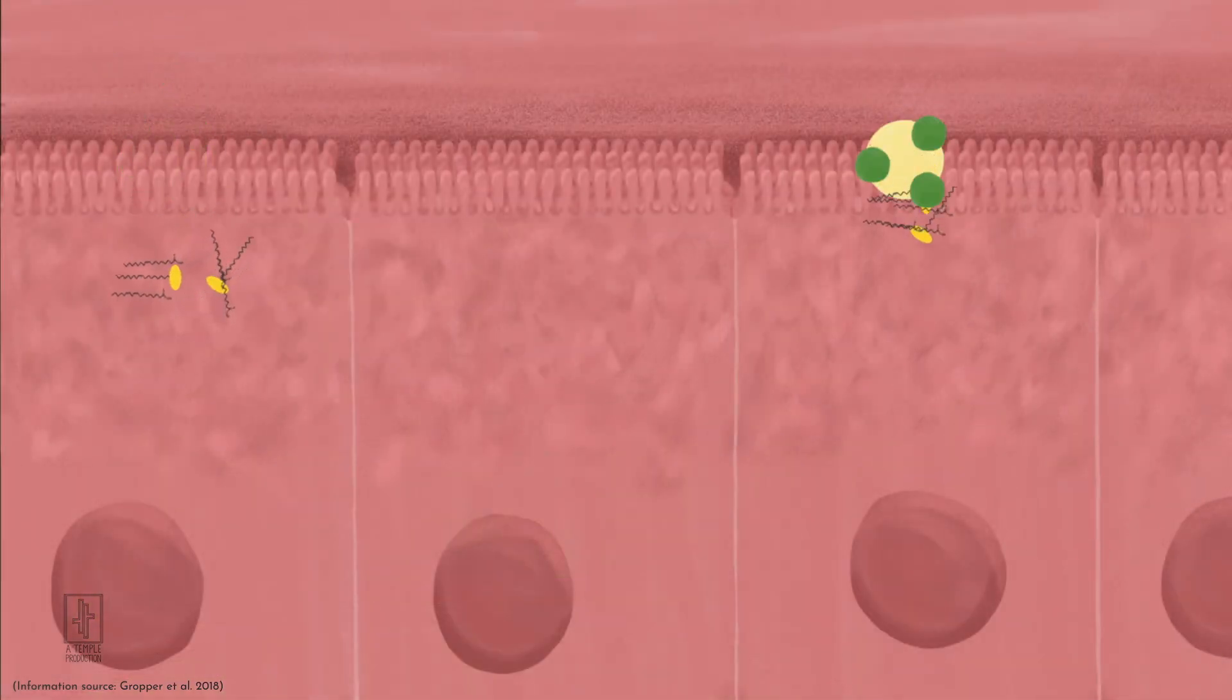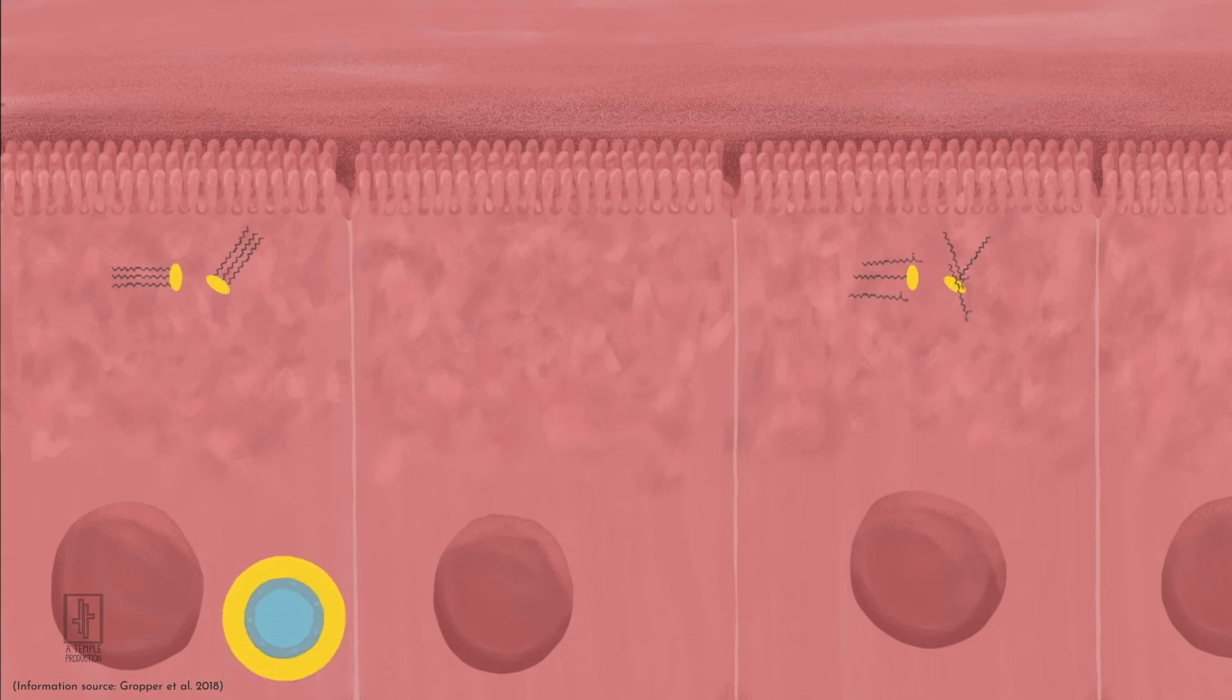In the enterocyte, the fat pieces are rebuilt into triacylglycerol and put into the fat submarine, or chylomicron.